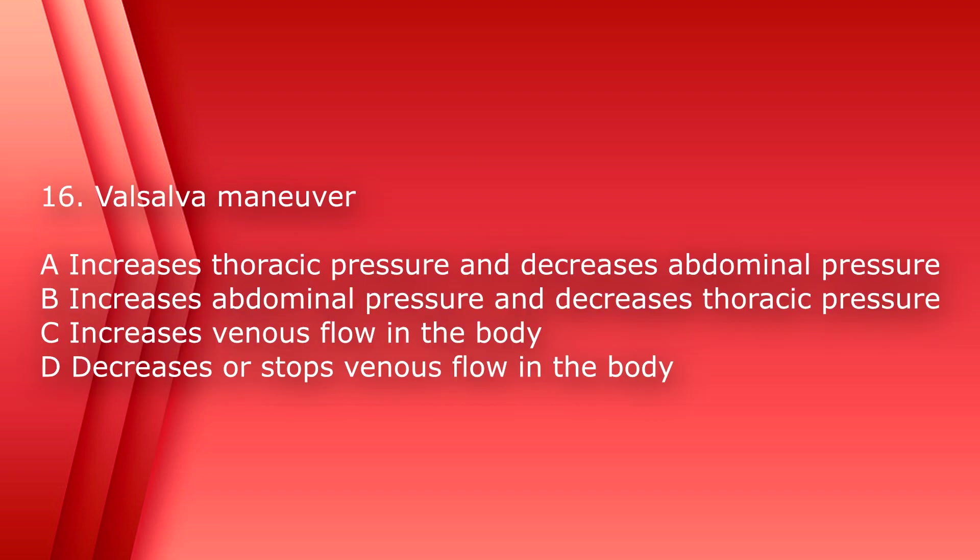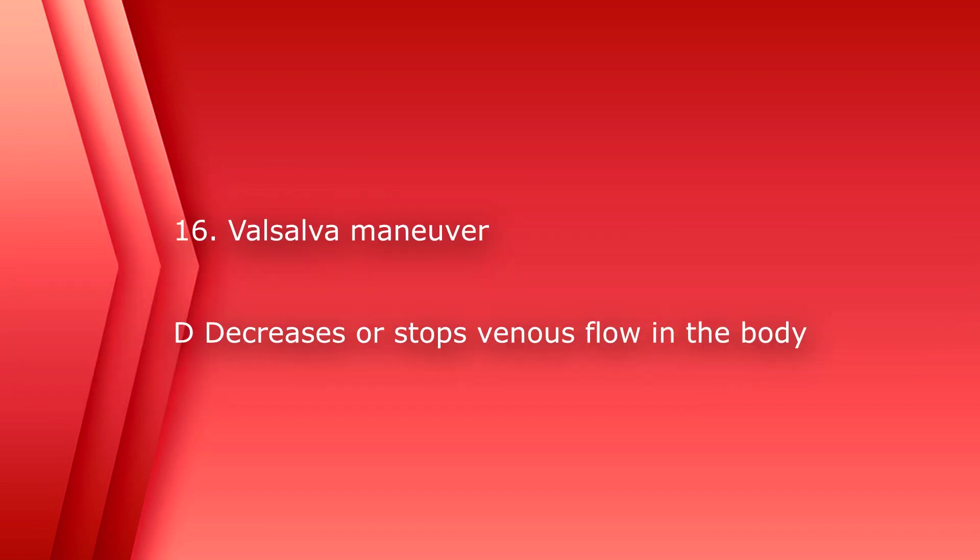Number 16. Valsalva maneuver A, increases thoracic pressure and decreases abdominal pressure. B, increases abdominal pressure and decreases thoracic pressure. C, increases venous flow in the body. Or D, decreases or stops venous flow in the body. The answer is D, decreases or stops venous flow in the body.